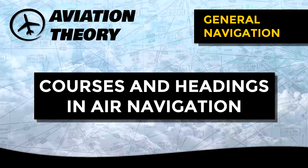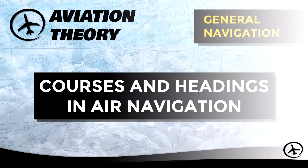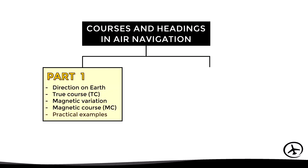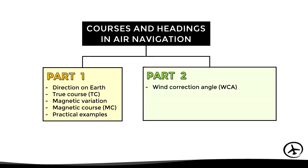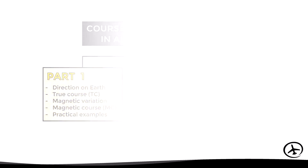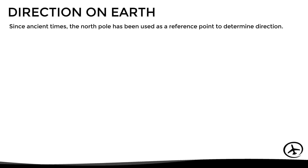Today we will talk about the different courses and headings used in aviation. Since this topic is a bit long, this video will be divided into two parts. In this first part we will see how directions are expressed on earth, and the definition of true course, magnetic variation, and magnetic course along with some practical examples. In the second part we will look at wind correction angle, true and magnetic heading, compass deviation, and compass heading. So let's get started — since ancient times the north pole has been used as a reference point to determine direction on earth.